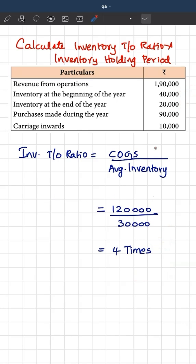And now, easily we can find out inventory turnover ratio, which is cost of goods sold by average inventory, and that is 1,20,000 by 30,000, and the answer is 4 times. It means inventory is turned over 4 times in a year.